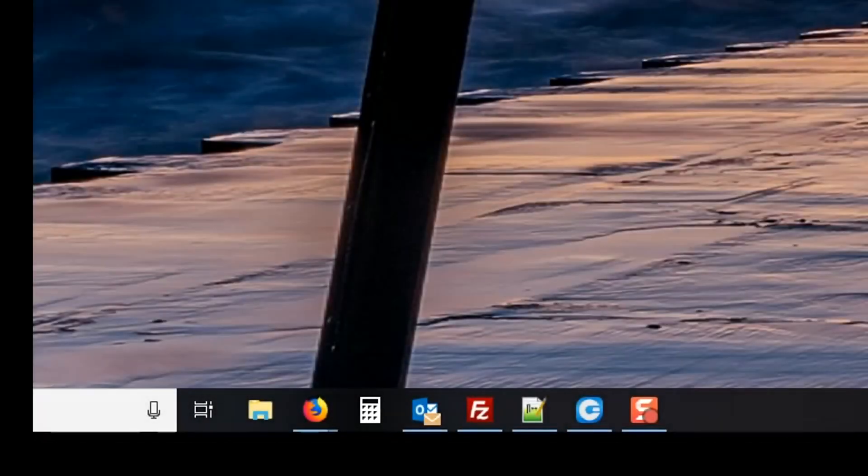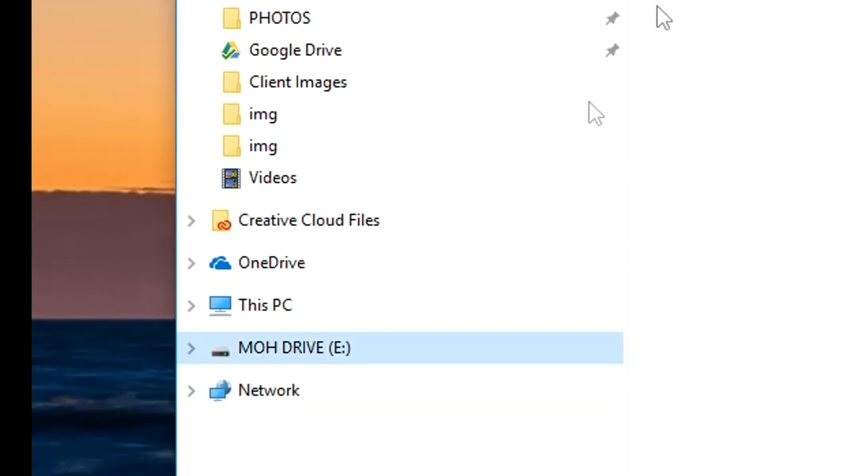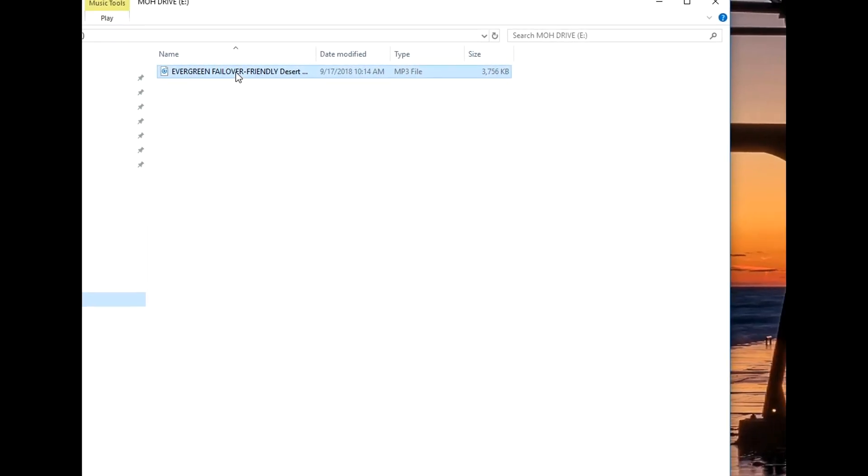Now let's see what's on the USB drive we inserted into the PC. The drive identifies itself as MOH drive. Here's what's on the drive right now. We'll save a copy of this file by dragging it to the desktop where a copy will be stored.